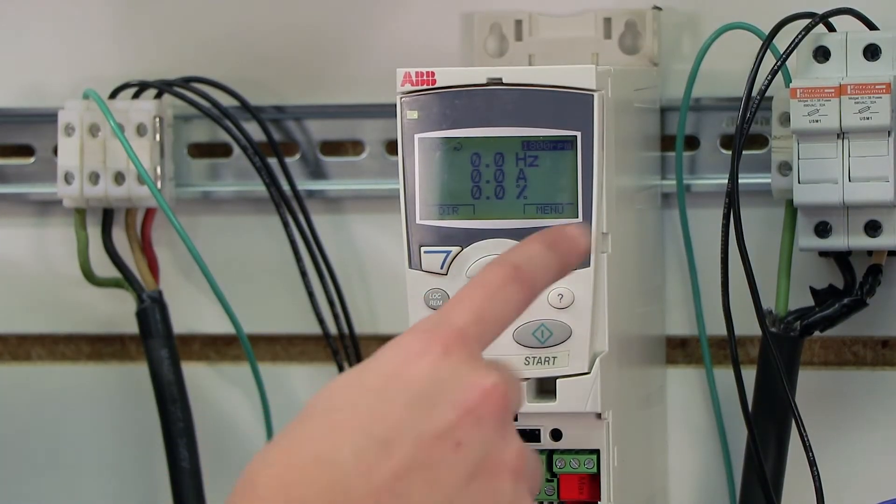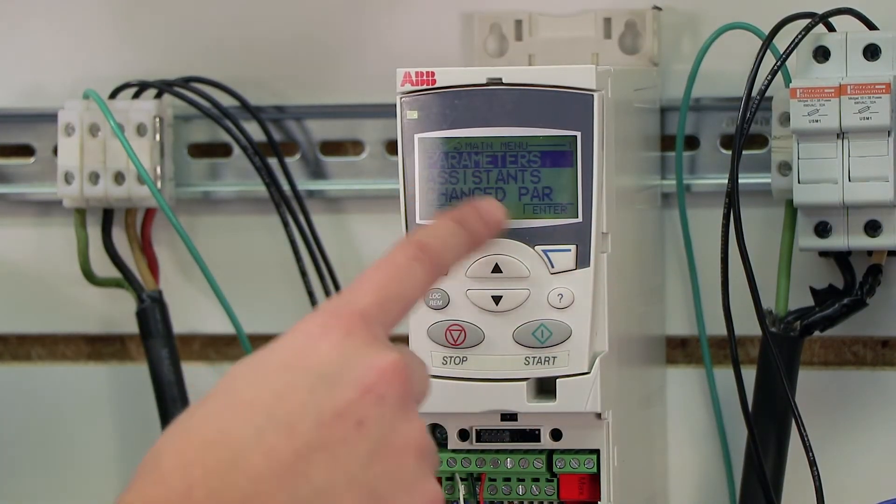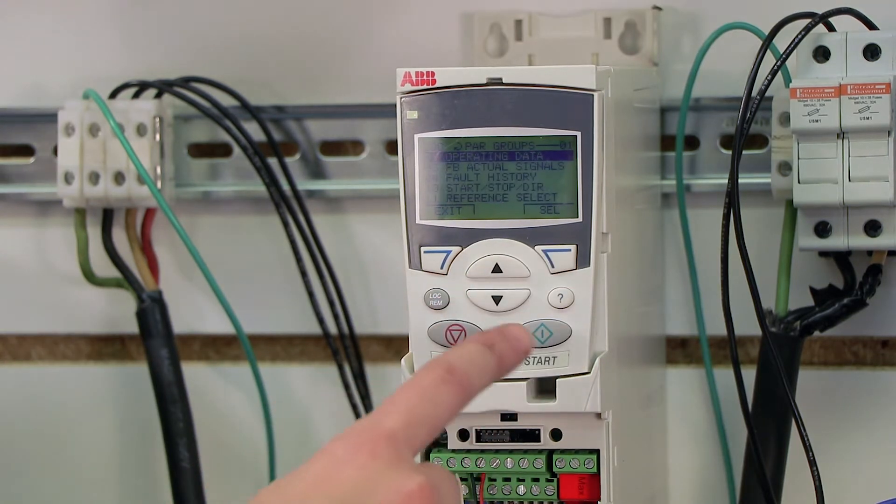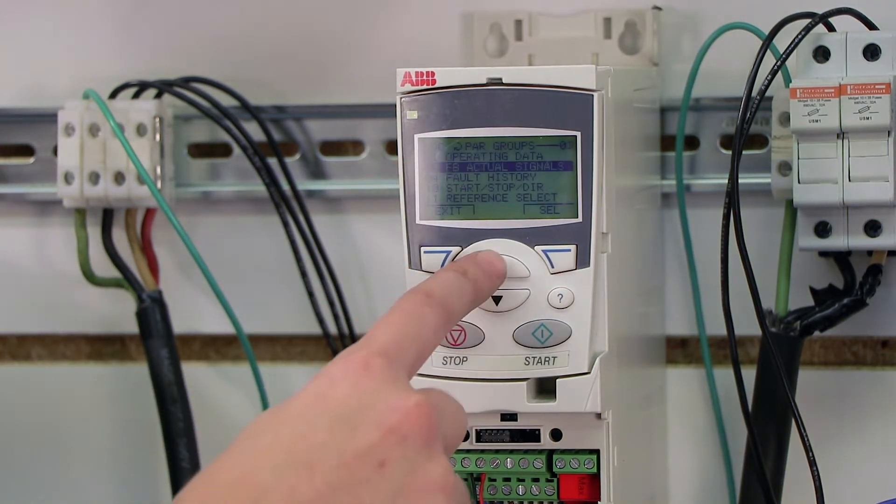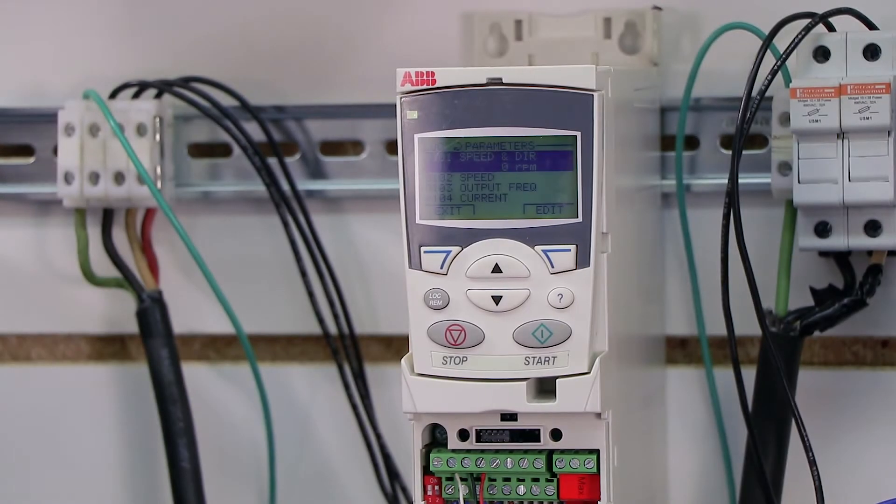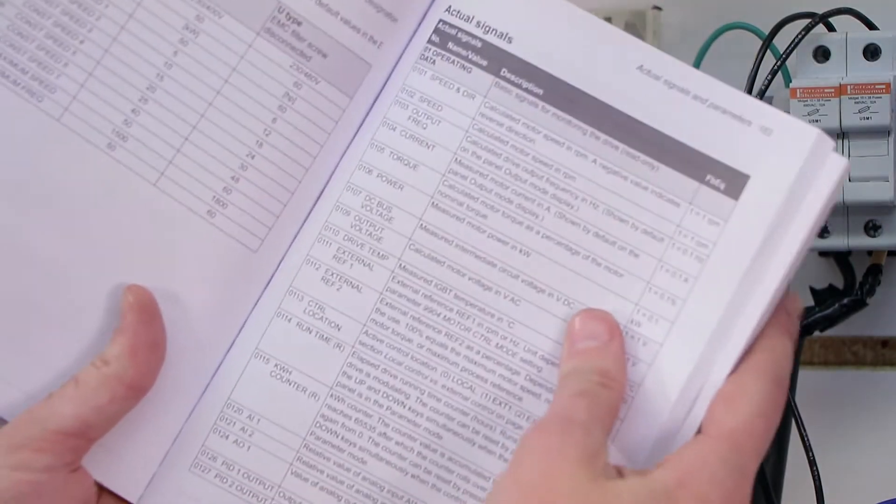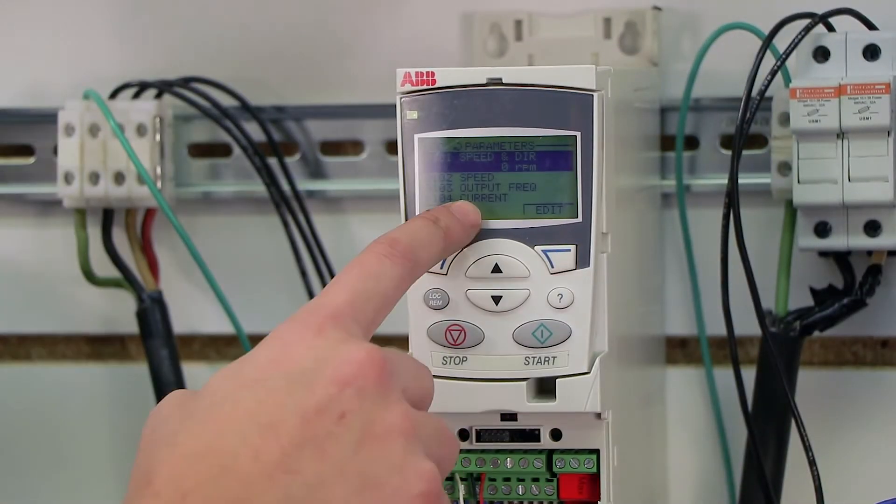So if I just pull up my menu and I go to parameters and I click enter, and I go to 01, operating data, and I press select. It'll bring up the list, the entire list of parameters that are discussed in the manual, right here on my display.